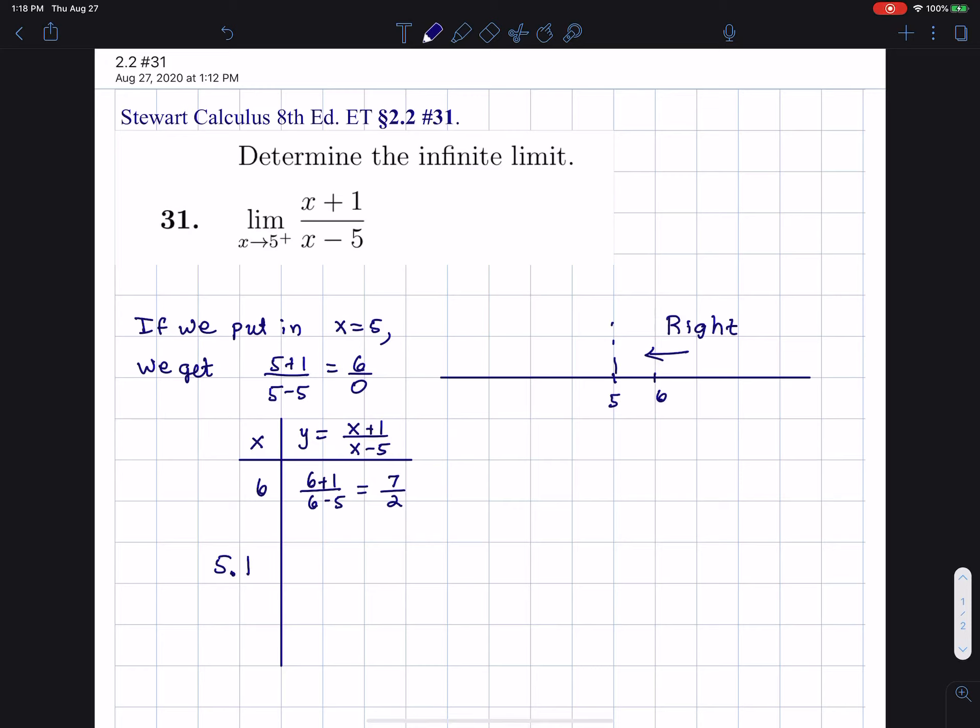But let's put in 5.1. 5.1 plus 1 over 5.1 minus 5 is what? Well, just to make things easier, I'm going to estimate and say 5.1 plus 1 is around 6. It's like 5 plus 1. The denominator is 0.1. That makes 60.